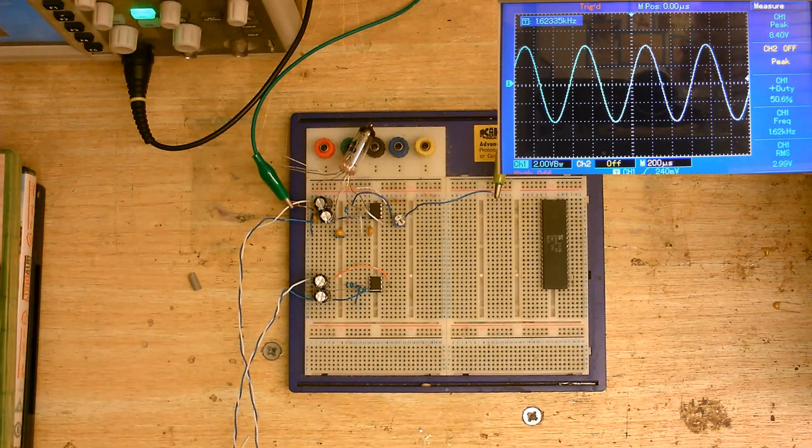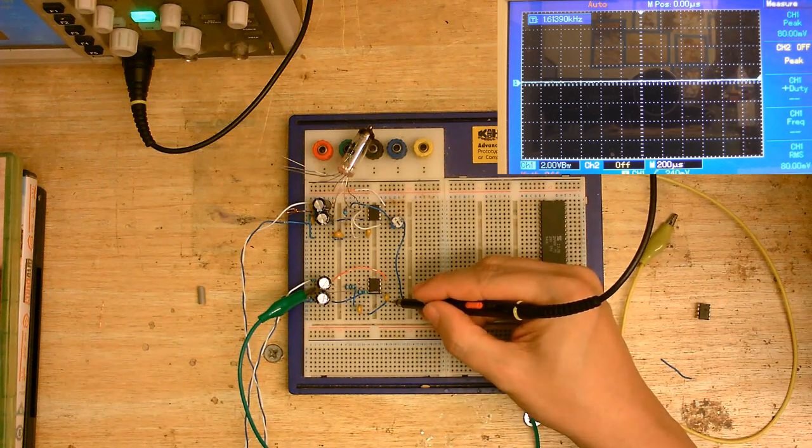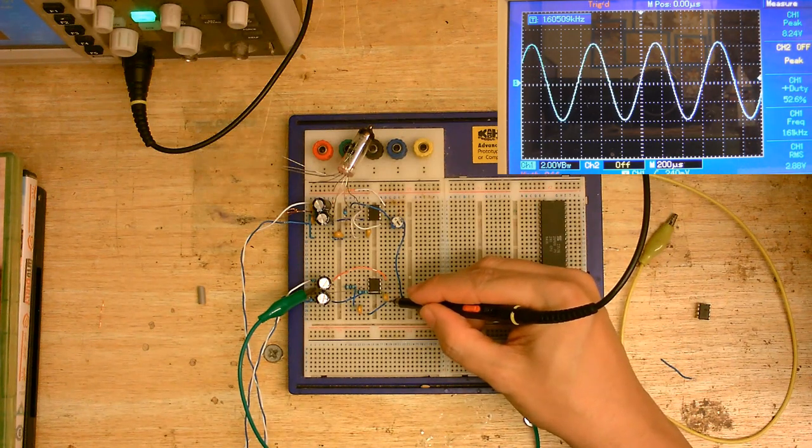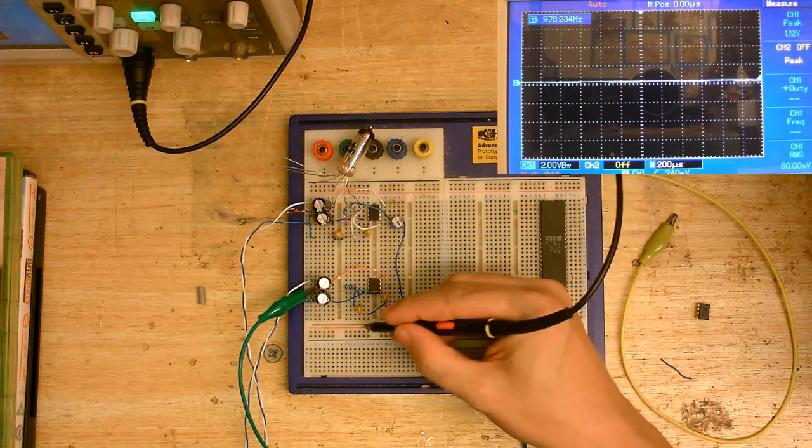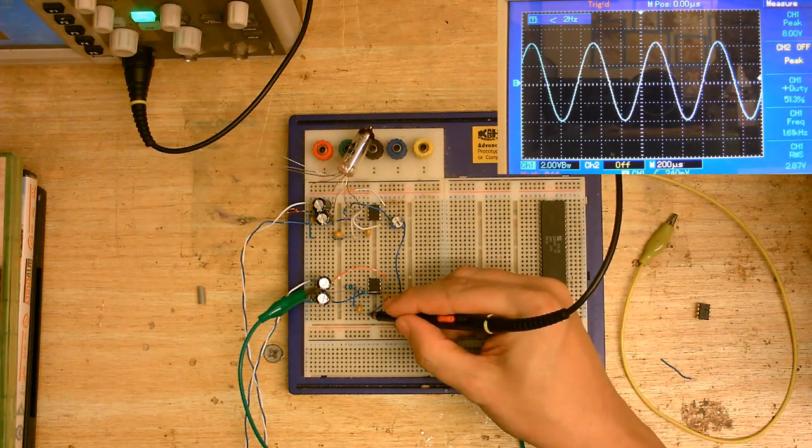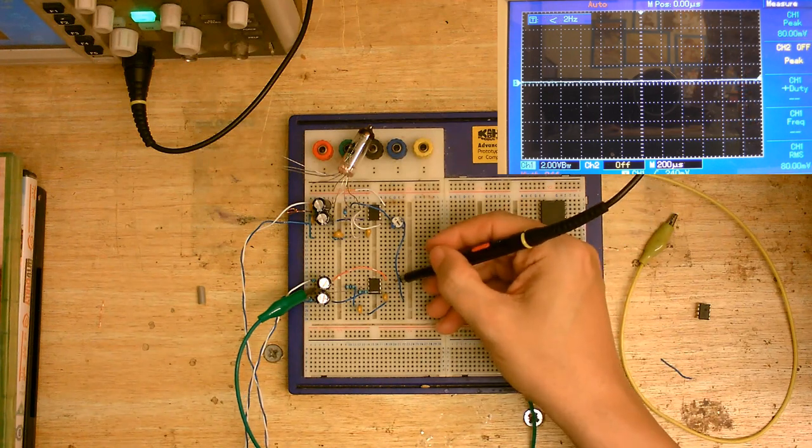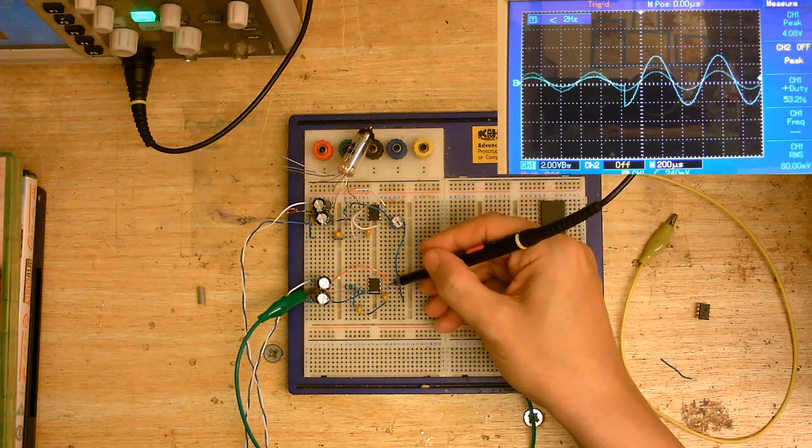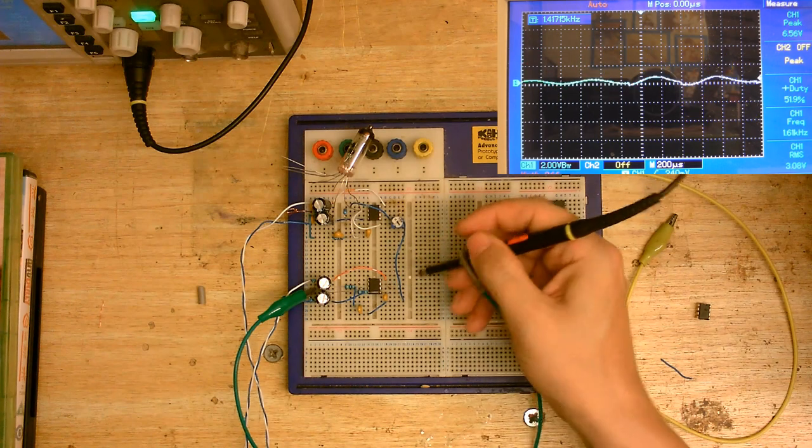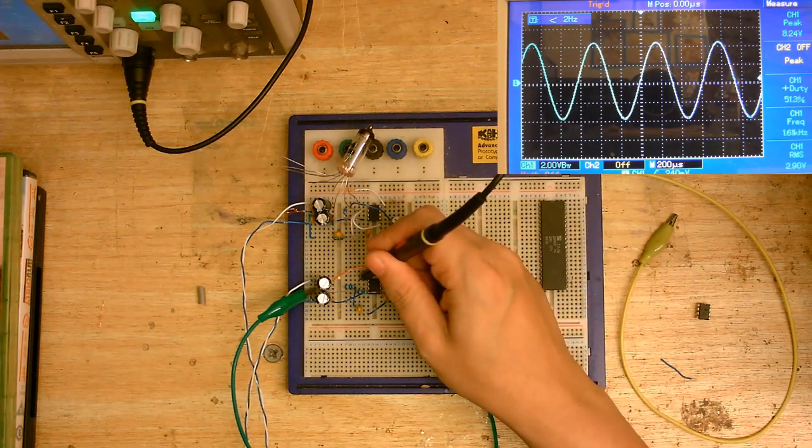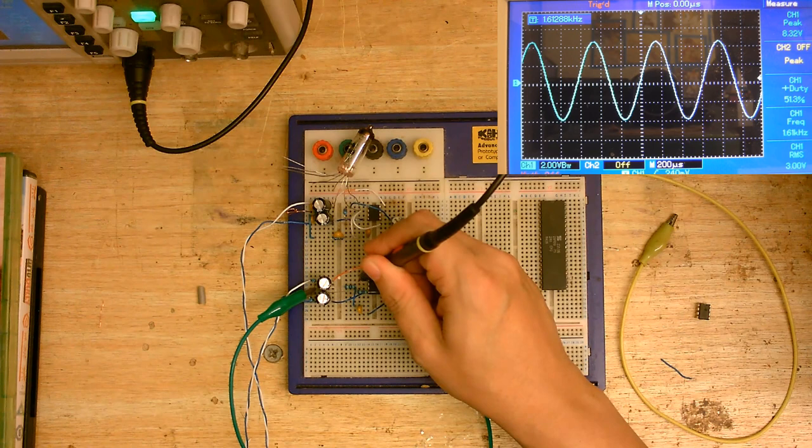A little bit of a spark there when I plug that in. One eternity of sticking wires in holes later. Let's just make sure it's still working. So this is our right input, getting a nice sine wave there. This is our left input. Yep. And now let's check our outputs. This is the right output, it's working nice and good. The left output, that's also working nice and good.